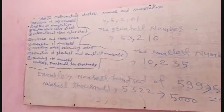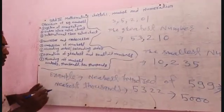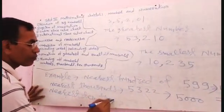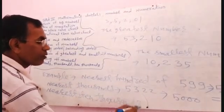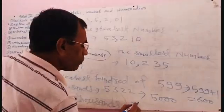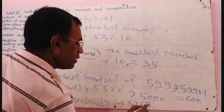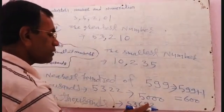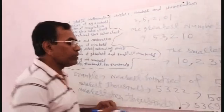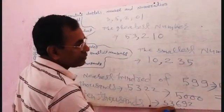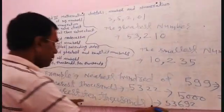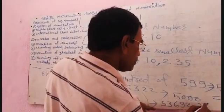Now I am going to teach you about nearest ten-thousand. To find the nearest ten-thousand, you have to look at the thousands digit. For example: 53,692. The place values are ones, tens, hundreds, thousands, ten-thousands. You have to look at the thousands digit — here it is 3, which is not five or more than five. So the nearest ten-thousand is 50,000.